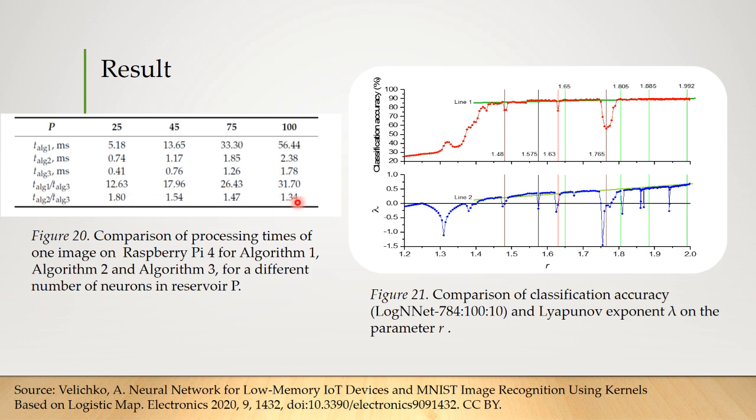A possible reason may be a nonlinear increase in the access time to RAM memory with an increase in the size of the data arrays. The processing time of one image by the presented algorithm is in the range from 0.4 to 50 ms. It allows MNIST images to be processed on a Raspberry Pi 4 with a frame rate in the kHz range.